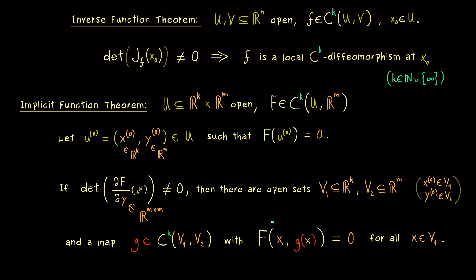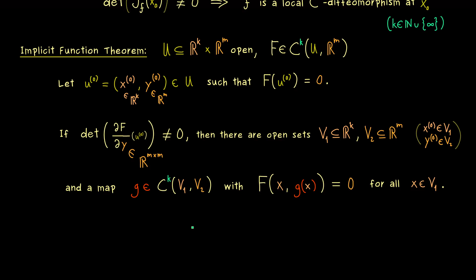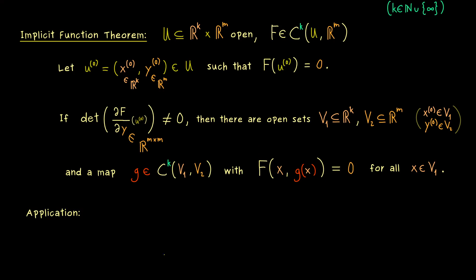Simply because in the proof of the implicit function theorem we use the inverse function theorem. So in particular if we know that our capital F is a C∞ function then g is as well. Okay so these are the general versions of the two theorems as you should remember them. And now we are ready to discuss a nice application of them for C∞ functions.